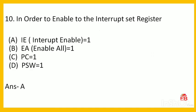Next: in order to enable the interrupt, which register bit is set to 1? Options are interrupt enable set to 1, enable all set to 1, program counter set to 1, or program status word set to 1. The correct answer is: set the enable all (EA) bit to 1. So option B is correct.